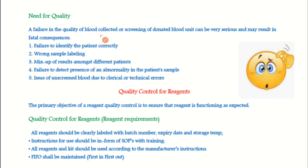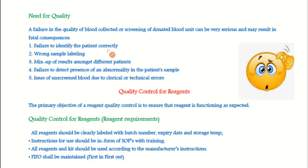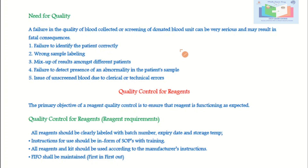Why is quality needed in blood bank? A failure in the quality of blood collected or screening of donated blood units can be very serious and may result in fatal consequences. Failure to identify the patient correctly, wrong sample labeling, mixed-up results among different patients, failure to detect an abnormality in the patient sample, and issue of unscreened blood due to clerical or technical errors are among the most common events that compromise blood bank service quality.